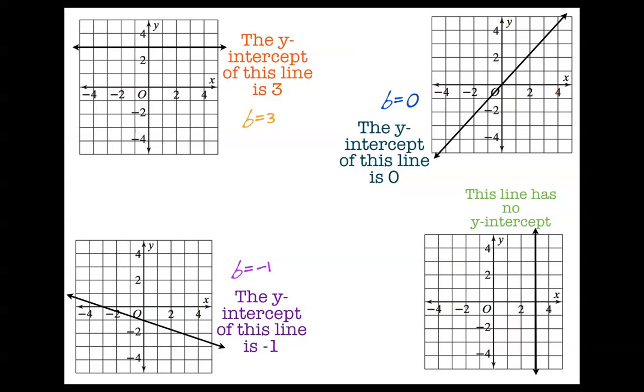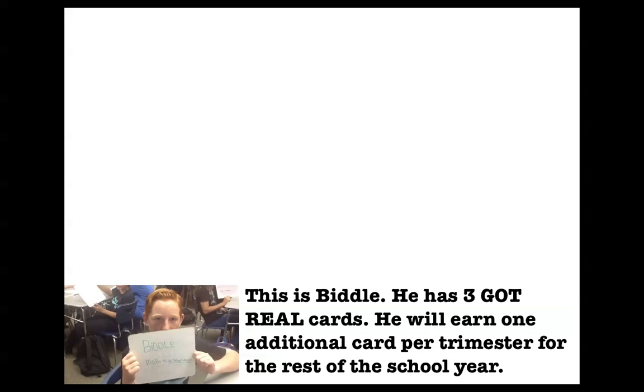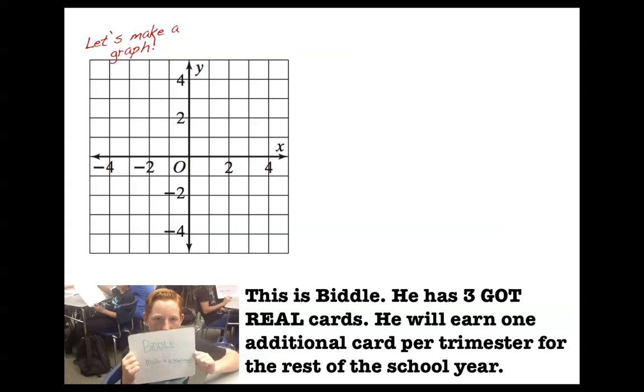Now what I want to talk to you about is Biddle. This is Biddle. He's got 3 Got Real cards, and he's going to earn 1 more additional Got Real card per trimester for the rest of the school year. Let's make a graph, a Biddle graph.